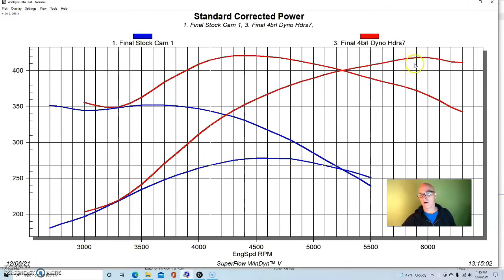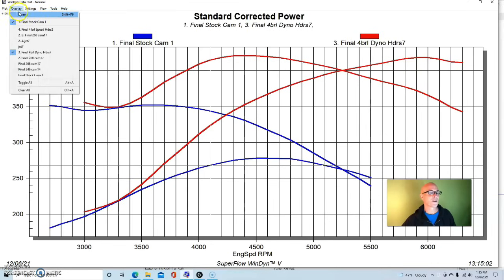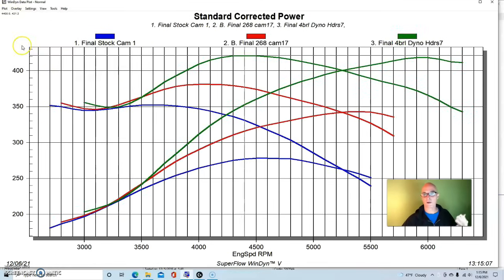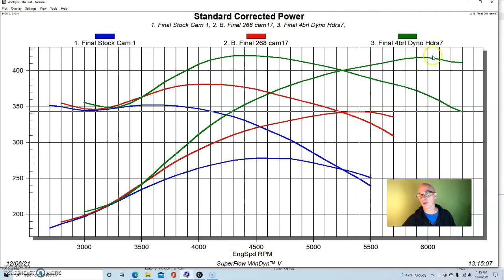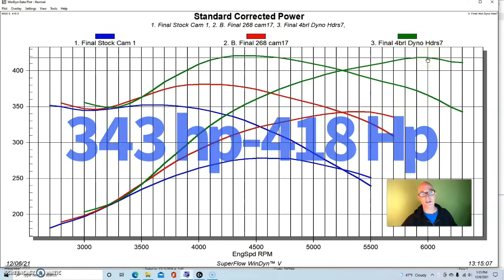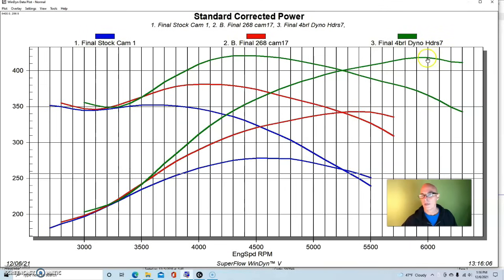So, you know, that's where we got to with our camshaft. Previously we got to right here. But now how do we get from 343 horsepower up to 418 horsepower? So we ended up producing 418 horsepower